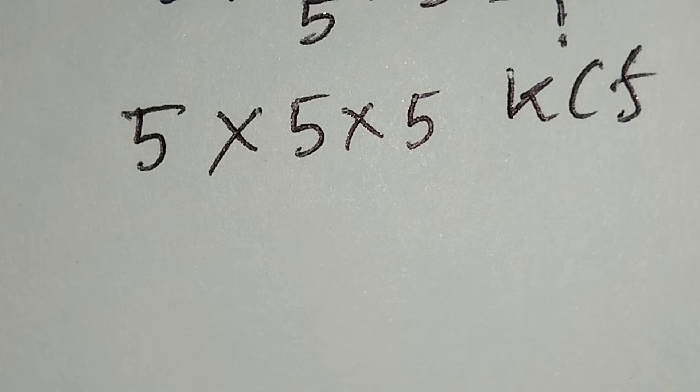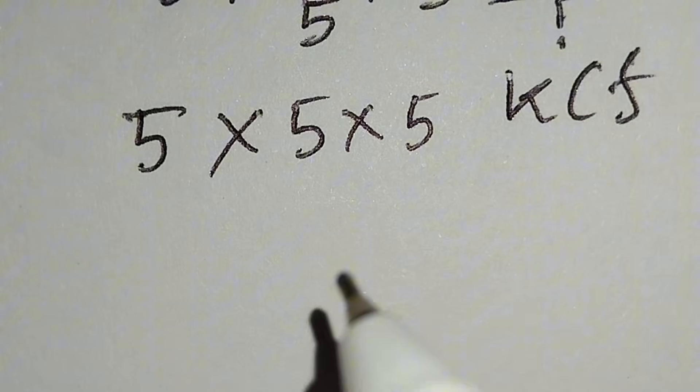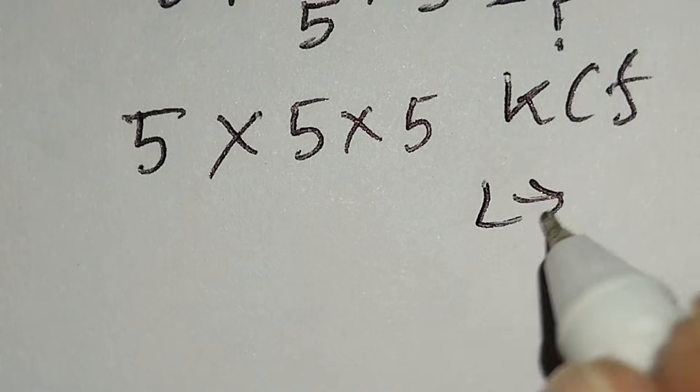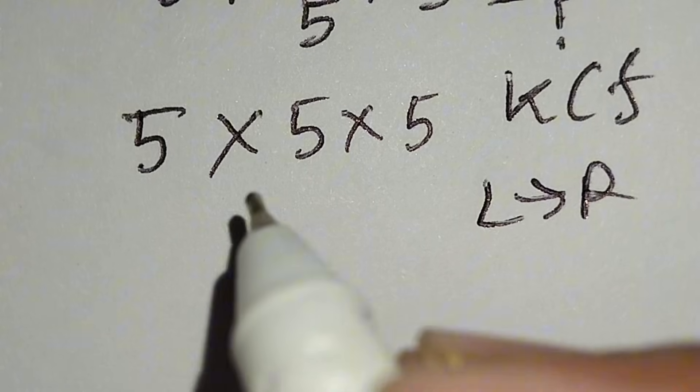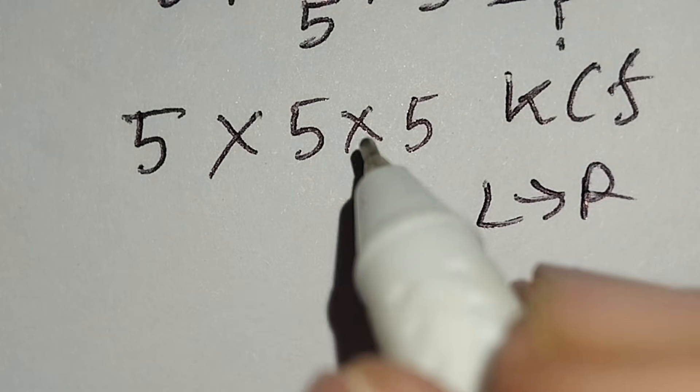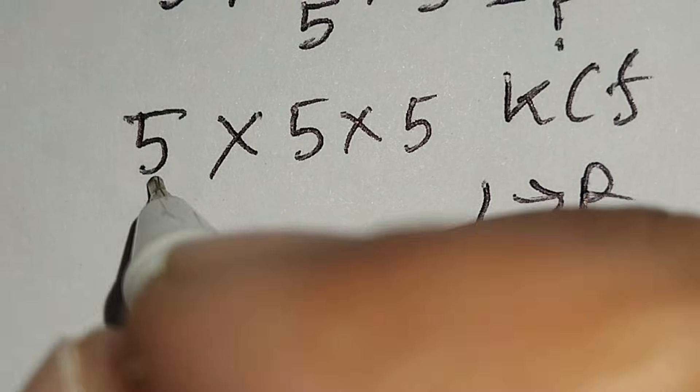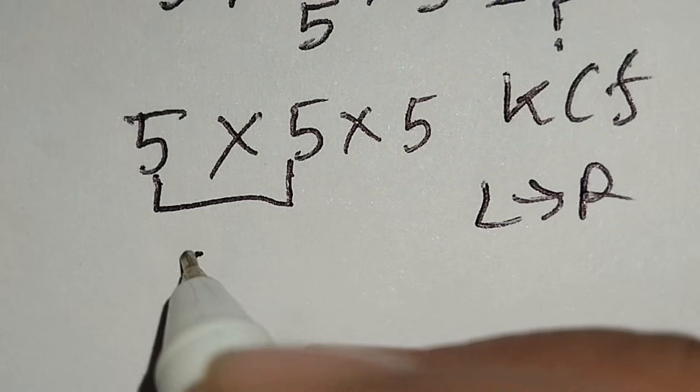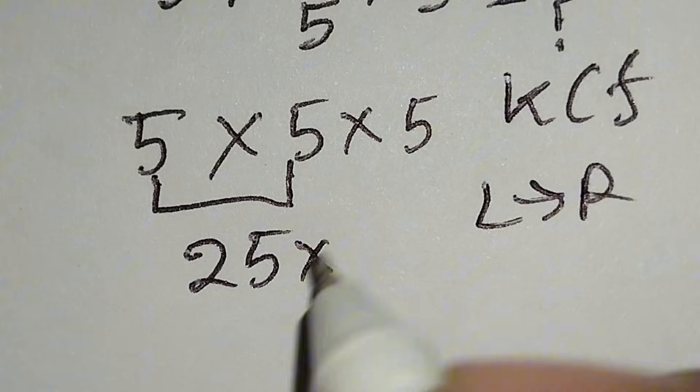According to the order of operations, when we have more than one multiplication, then we have to work left to right. Therefore, at first we have to work with this multiplication, then this multiplication. Here 5 times 5 gives us 25 times this 5.